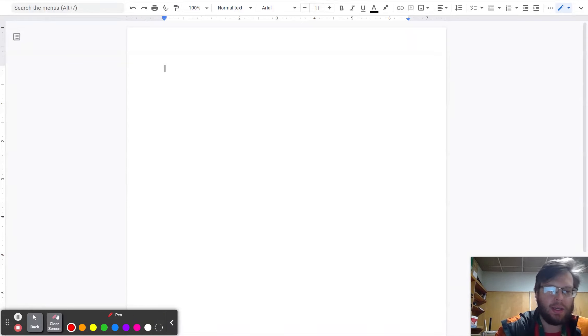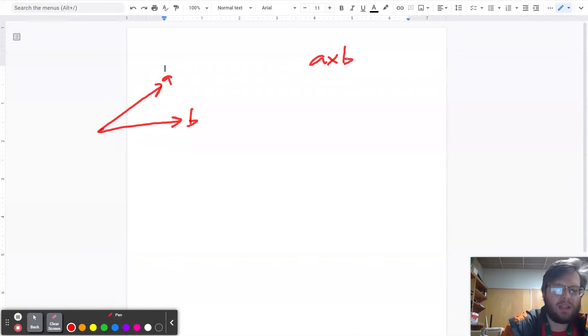So the big idea with the cross product is if you've got a vector A and a vector B, then if you do A cross B, that's going to give you a vector that's normal to both A and B.